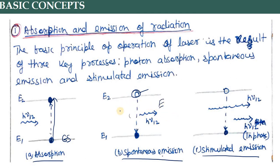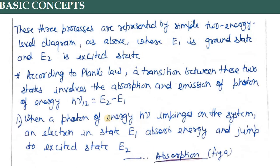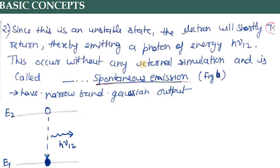Now, once the electron reaches the higher state, which is an unstable state, it wants to become stable again and return. When it returns, by the law of conservation of energy, it gives back the same energy — that is E2 minus E1. This kind of emission, if it is radiative, is called spontaneous emission. The energy is E2 minus E1. When a photon of frequency ν impinges on the system, the electron at E1 absorbs energy and jumps to the excited state, and that emission is called spontaneous emission.